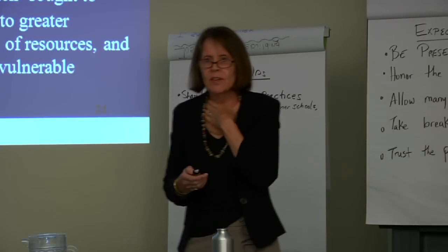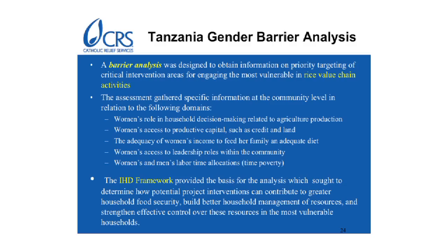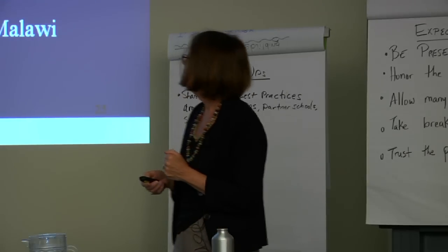In Tanzania, we did something very different. We did what's called a barrier analysis, which took this IHD framework and set up a system of looking at legal, political, social, and economic barriers to the engagement of vulnerable people — in this particular case related to a value chain on rice. We analyzed it using IHD and using a gender lens to see what were the constraints that we needed to make sure we were going to put into our programming — things that would deal with women's role in the household, access and control of resources, decision-making — things that are really critical to that piece of the pie.